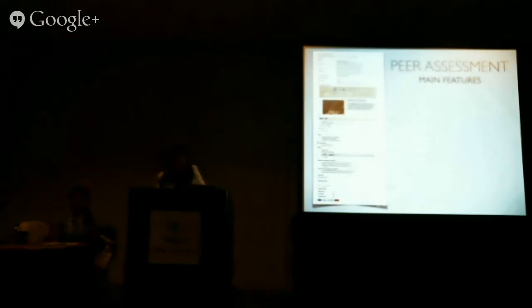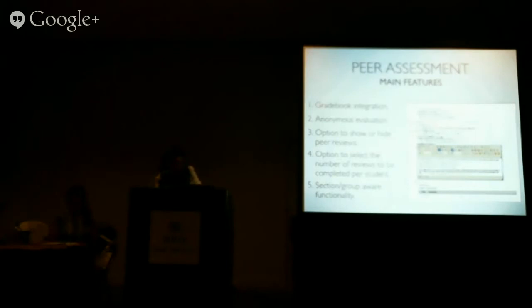The peer assessment option is right there on the settings page. When you click on it, you get more options expanding. These options include integration with the gradebook, so the grade students give each other can be sent directly to the gradebook. There is also the option for anonymous evaluations, the option to show or hide peer reviewers, the option to select the number of reviews to be completed by students — you can enter one, two, three, or four — and it's also group-aware, so you can select which groups to release this peer review assignment to.